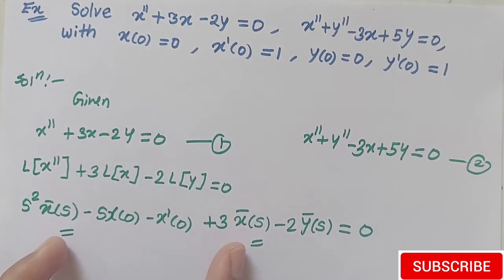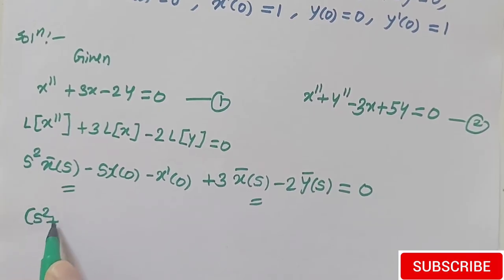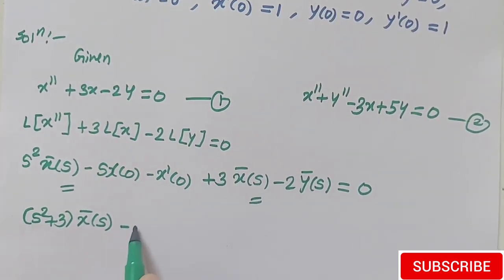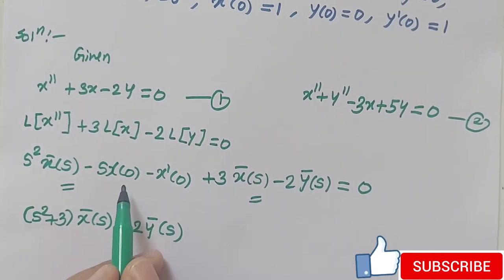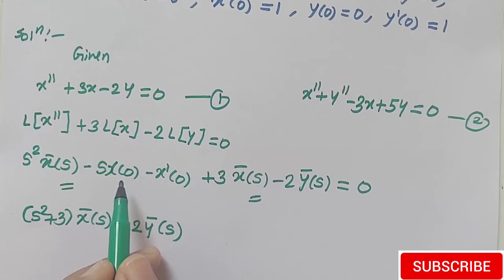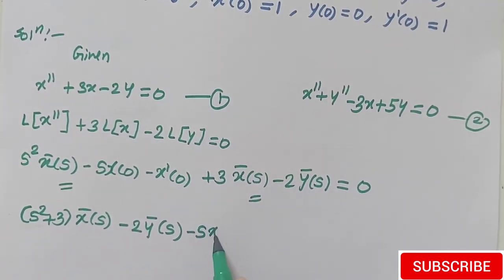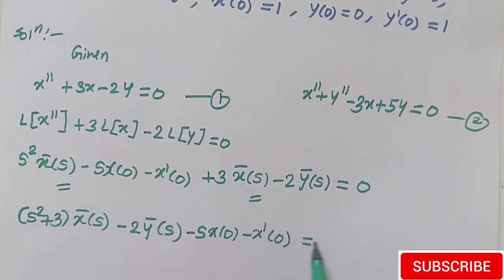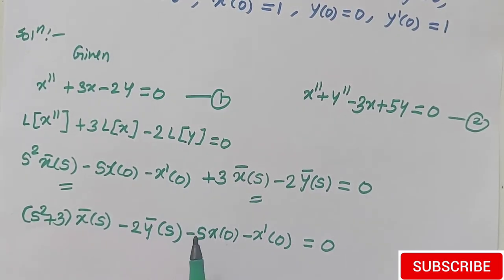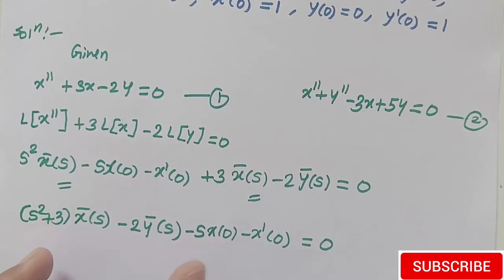In the next step we collect the terms of X̄(s). These two terms contain X̄(s); taking X̄(s) common, the remaining factor is (s² + 3). Next we collect the term of Ȳ(s): minus 2·Ȳ(s). Lastly we write the constants: minus s·x(0) minus x'(0) equals to 0. We always write the X̄(s) term first, then Ȳ(s), and lastly the constants — we follow this pattern to make it easier to solve the simultaneous equations.